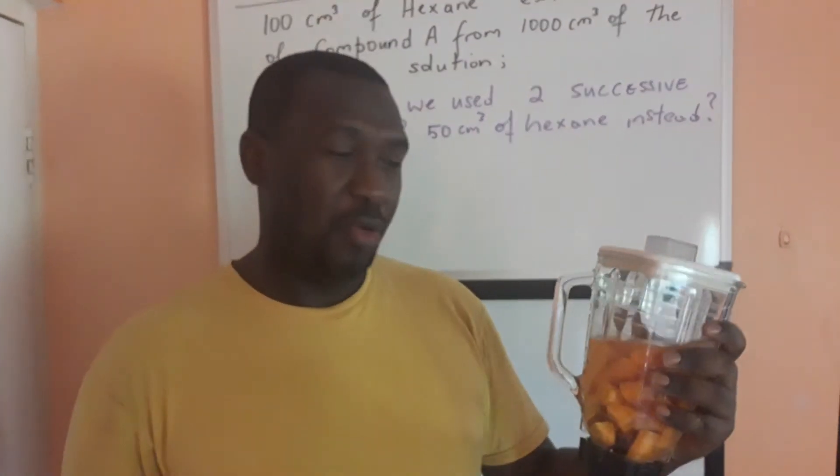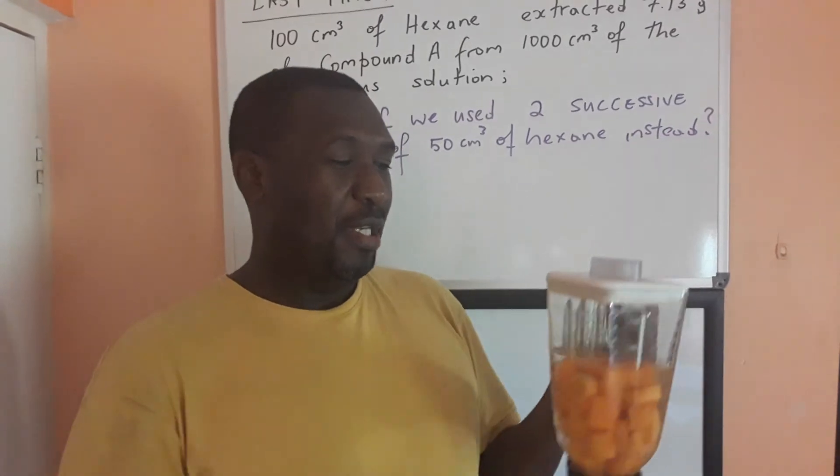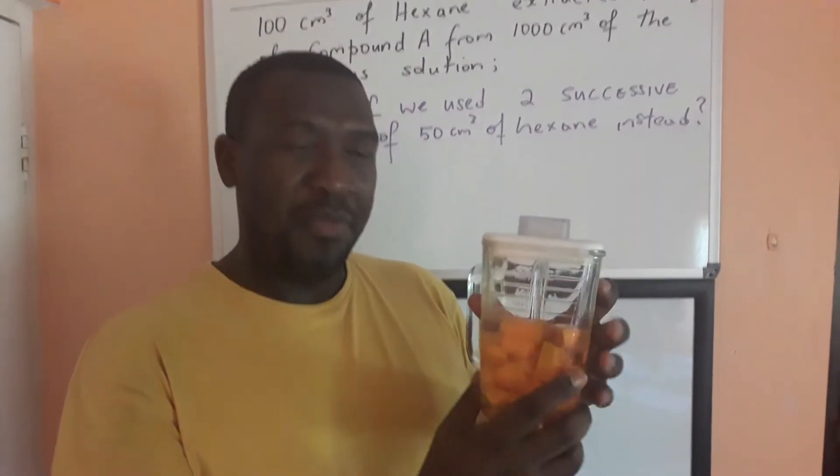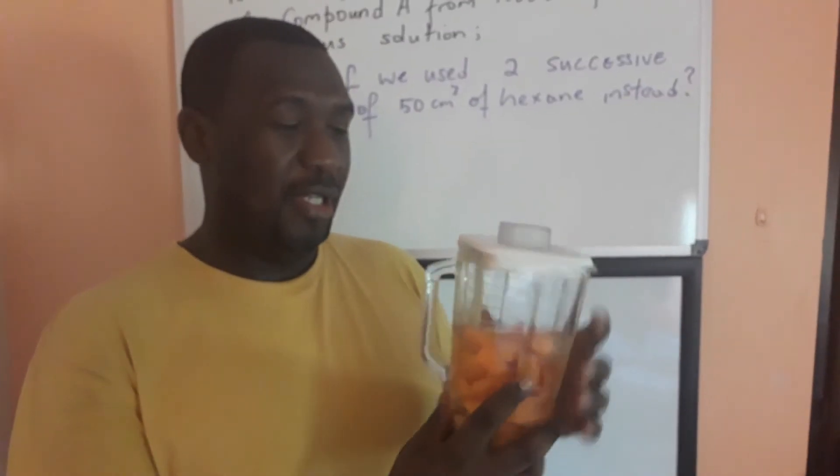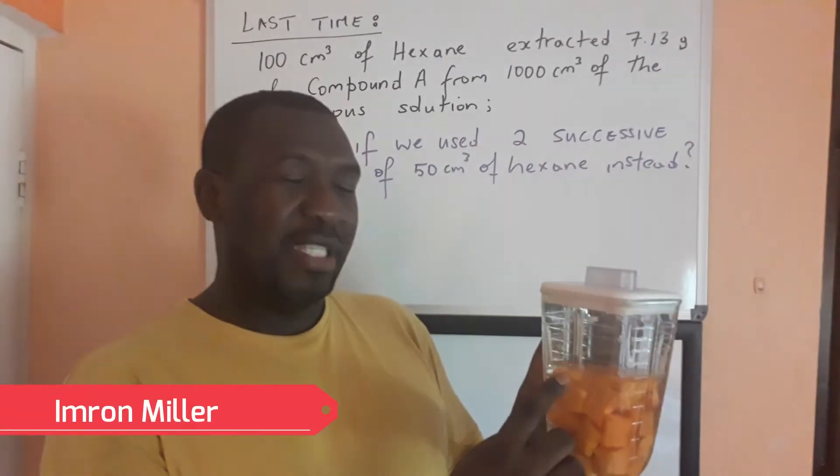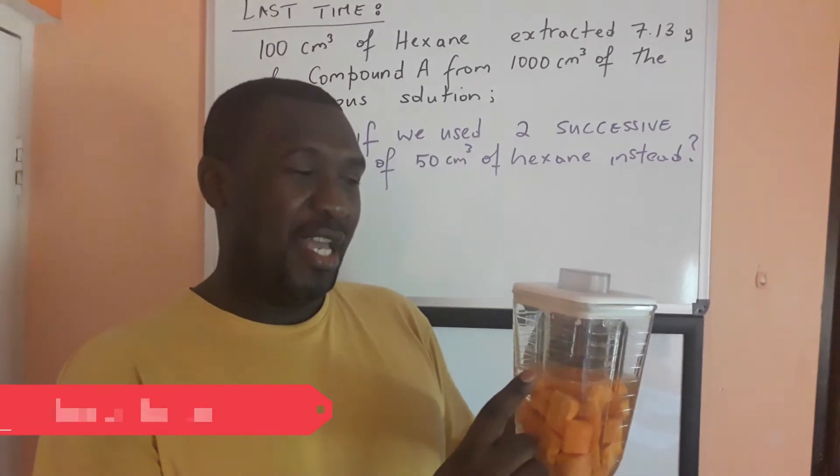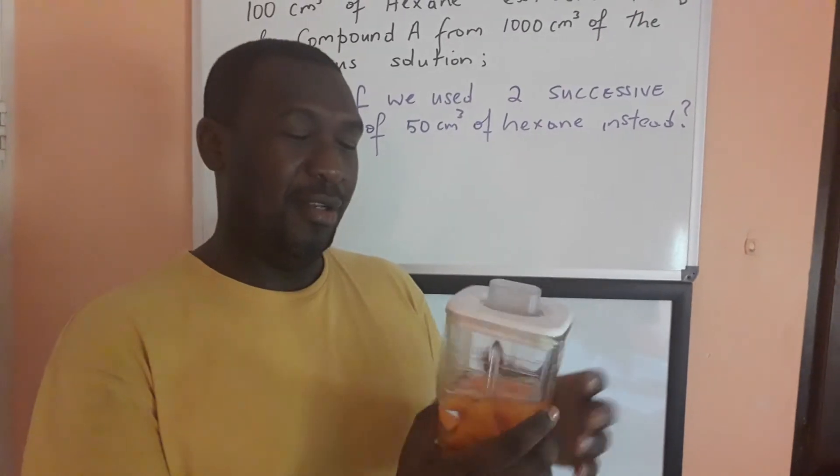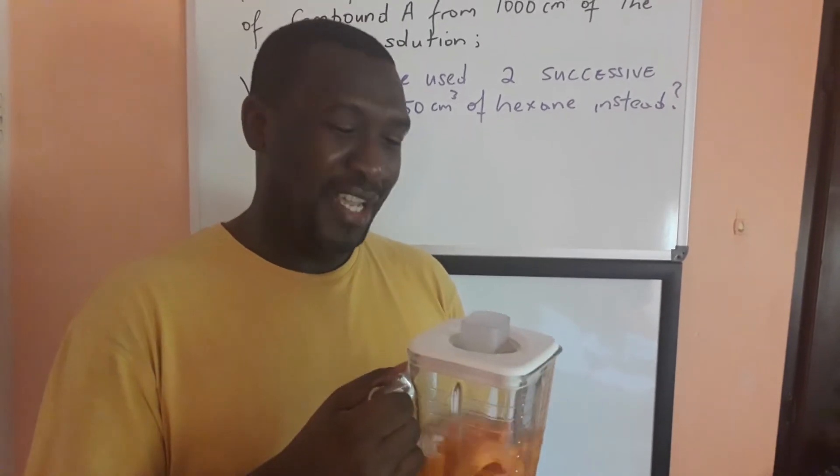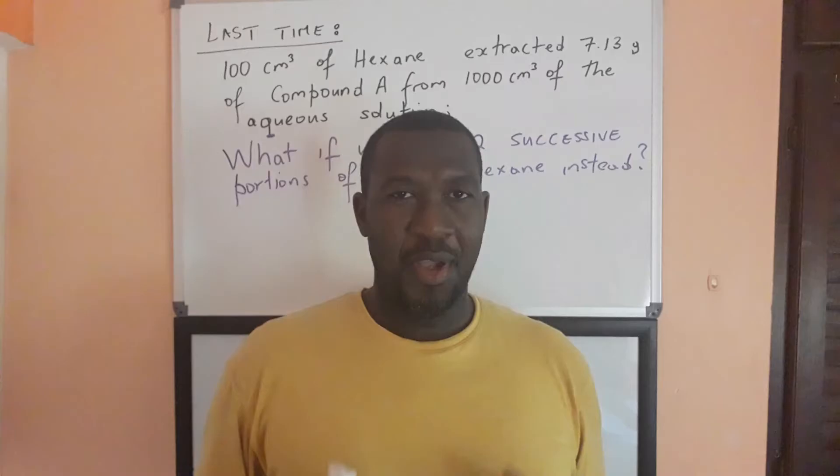She wants to know, will it be better to fill this blender with water and extract the carrot juice from this carrot at one go, trying to get all the nutrients as possible? Or will it be a better option if she just uses half the volume of carrot juice and extracts it twice? What will she do? How can you advise her? We're going to do that today on Chem Crackers.